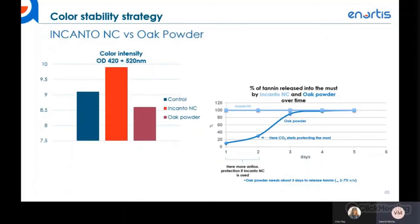Trial data comparing Incanto C with oak powder shows that color reservation using Incanto C (red line) is substantially higher than the control (blue line) and oak powder (which performed even less than the control). In terms of tannin and polysaccharide release timing, oak powder takes around 3 days as seen in the graphic, while with Incanto C these compounds are available from time zero — providing protection from oxygen immediately.